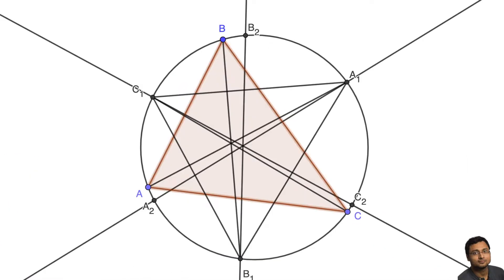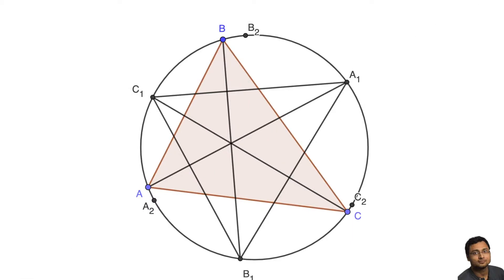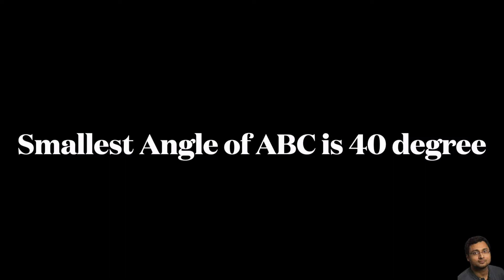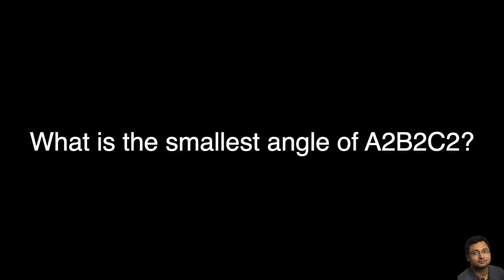Now we have a third triangle: A2, B2, C2. Suppose we know that the smallest angle of triangle ABC is 40 degrees. Then what would be the smallest angle of this new triangle A2, B2, C2? That's the question.